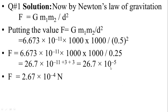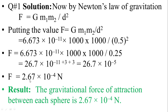We can write in scientific notation. So the force between the two spheres F is equal to 2.67 multiplied by 10 raised to power minus 4 Newton. Finally, the gravitational force between the two spheres is equal to 2.67 multiplied by 10 raised to power minus 4 Newton.